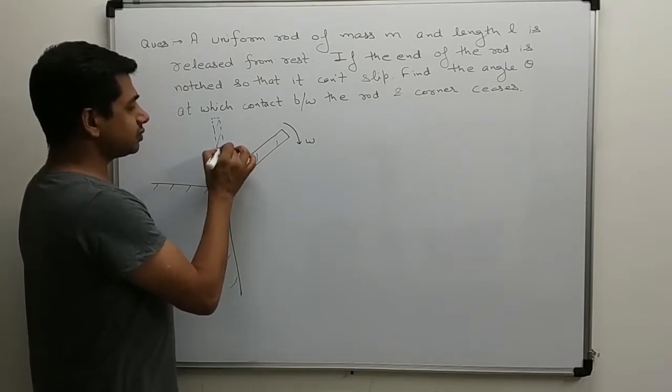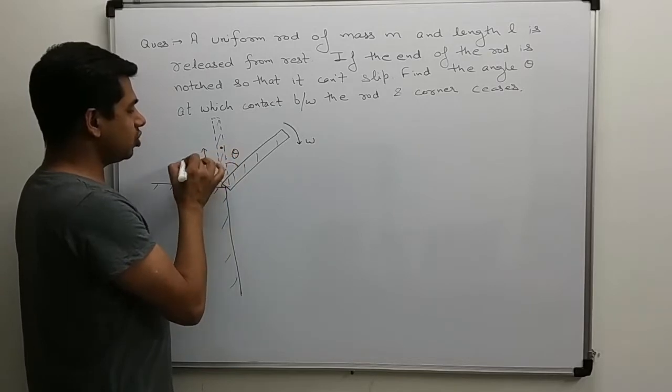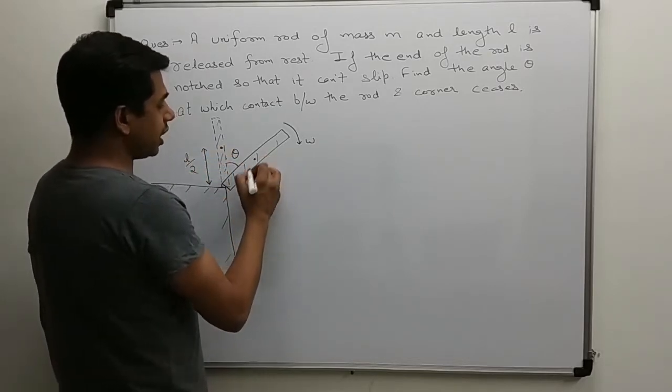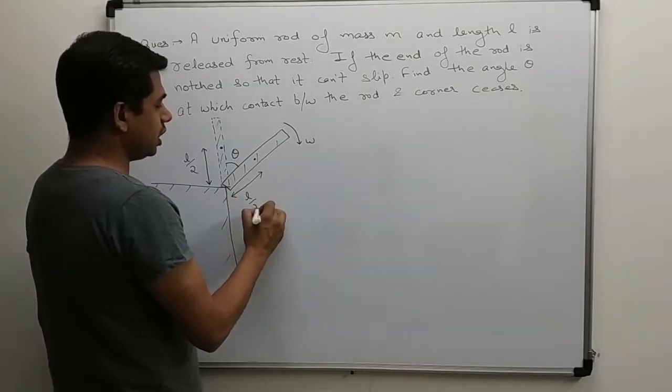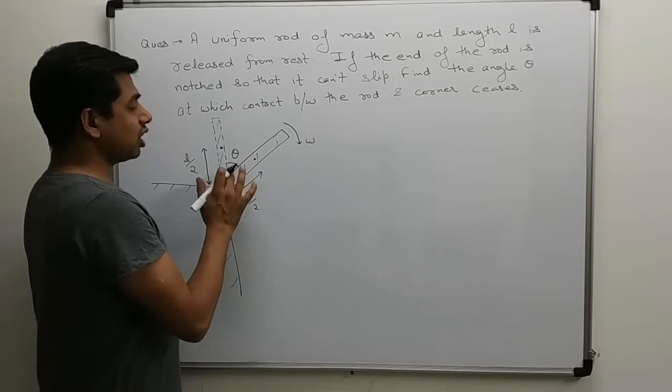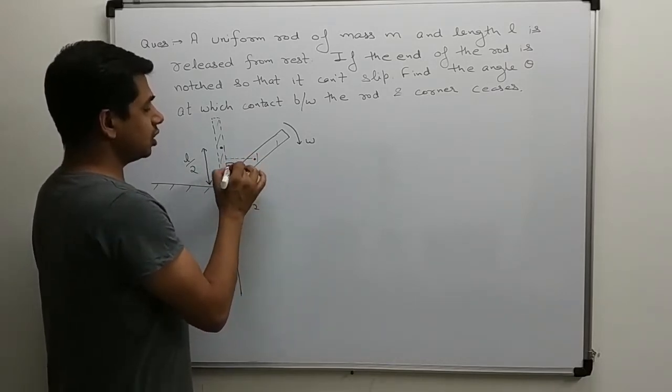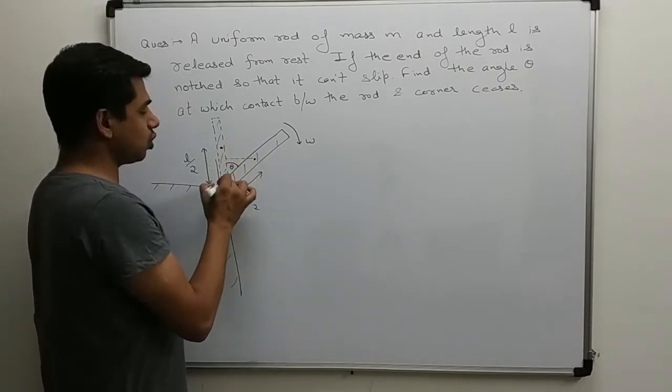When rod's center of mass is initially at height l by 2. From edge its distance is also l by 2. But vertically it will shift downward. How much will it shift? This angle is theta. So this is l by 2, so this becomes l by 2 cos theta.